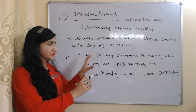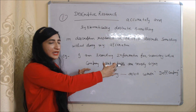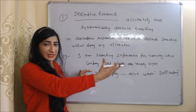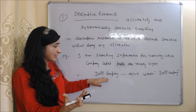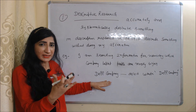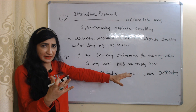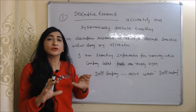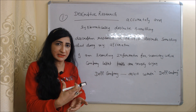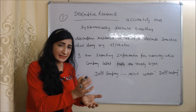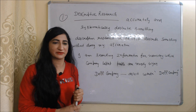For example, I am searching information about which company's laptop people are mostly buying nowadays. Suppose according to my research the answer is Dell company. So in my research data, I will write Dell company as it is without doing any alteration, because in descriptive research we describe something without alteration.